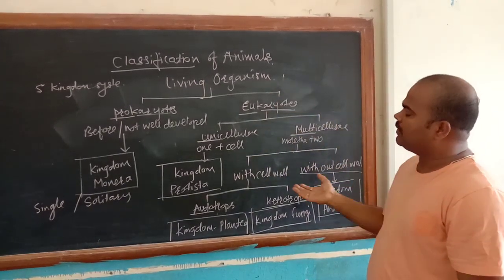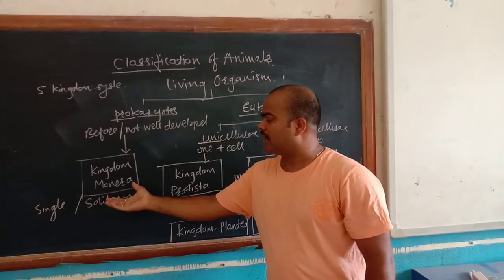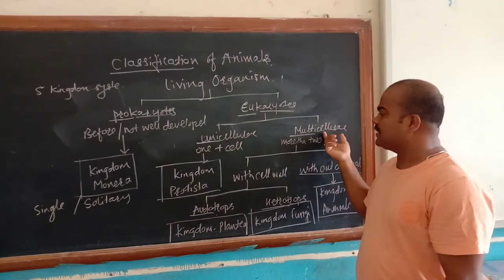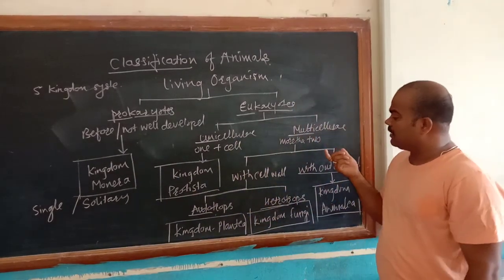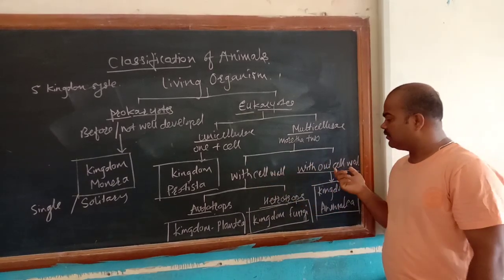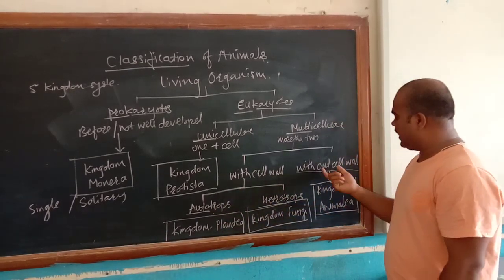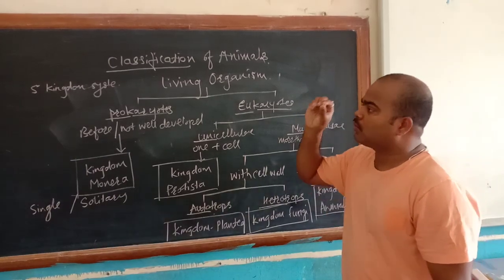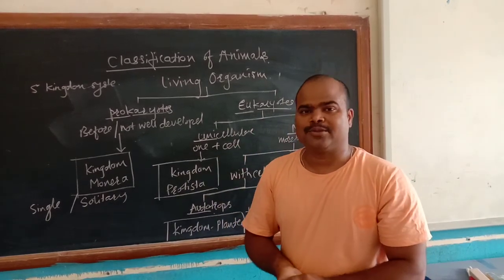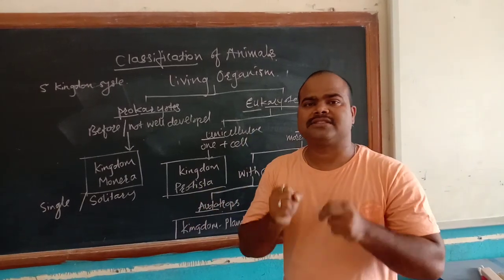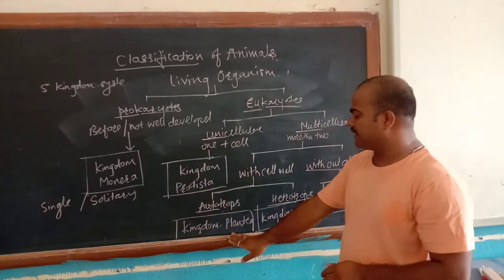To summarize: there are prokaryotes and eukaryotes. Kingdom Monera comes under prokaryotes — it is unicellular. In eukaryotes there are unicellular and multicellular. In the multicellular there are two bifurcations — with cell wall and without cell wall. We will start with the largest one: Kingdom Plantae.